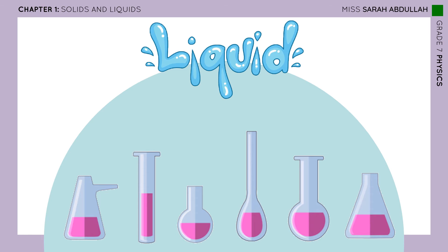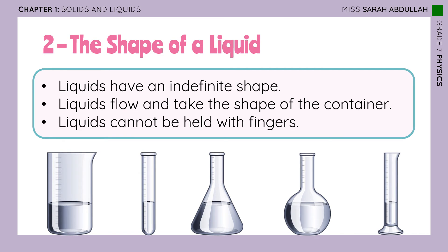If I brought the same amount of water and poured it into six different vessels, does water have the same shape in all vessels? No, it doesn't. So does a liquid have a definite shape? No — a liquid has an indefinite shape. It takes the shape of the vessel that contains it. Liquids flow and take the shape of the container. Liquids cannot be held with fingers.